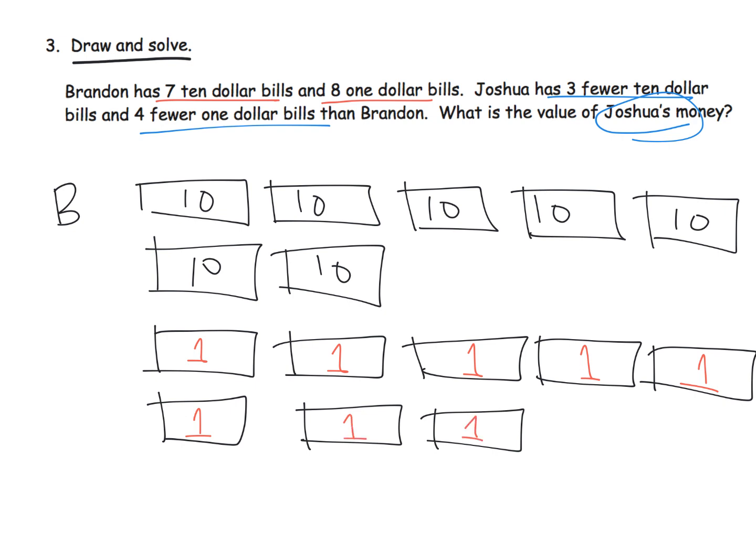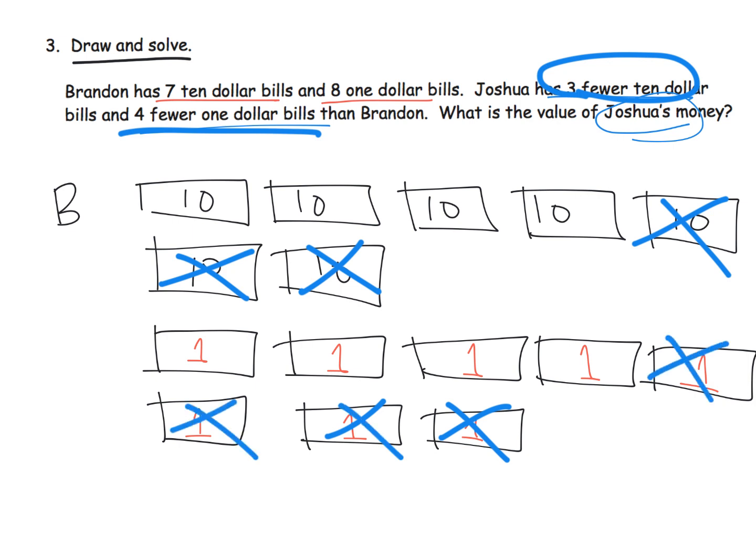Now Joshua has three fewer ten dollar bills, so I'm going to cross off three: one, two, three. And he has four fewer one dollar bills: one, two, three, four.